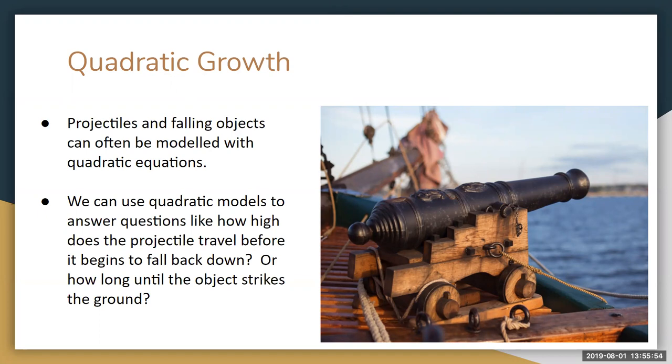A common example of the former are projectiles and falling objects. Imagine a cannonball fired up into the air. We could measure its height at different times and model it with a quadratic equation, and then use that model to predict things like what's the maximum height the cannonball reaches before falling back down, or how long until the cannonball strikes the ground.